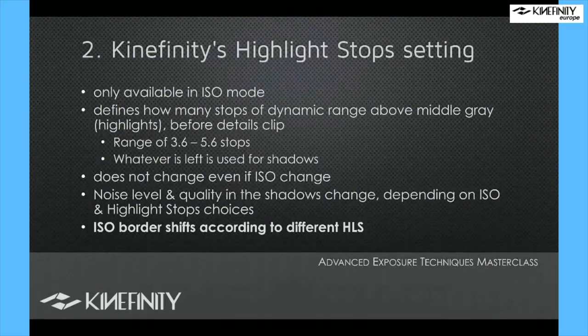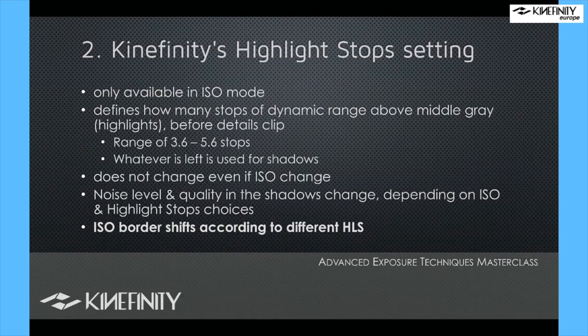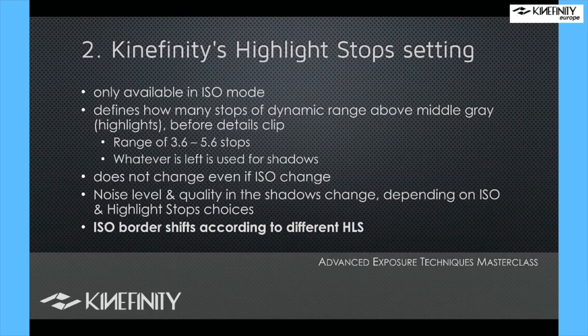Next, the Kinefinity highlight stop setting — only available in ISO mode. It defines how many stops of dynamic range you have above middle gray before highlights clip, adjustable from 3.6 to 5.6 stops. Whatever is left of the total dynamic range is used for shadows. Importantly, the highlight stop setting remains constant even if the ISO changes, as long as you're in ISO mode. However, the ISO border between the two base ISOs will shift depending on which highlight stop value you've chosen, and the noise level and quality in the shadows change with the combination of ISO and highlight stops.